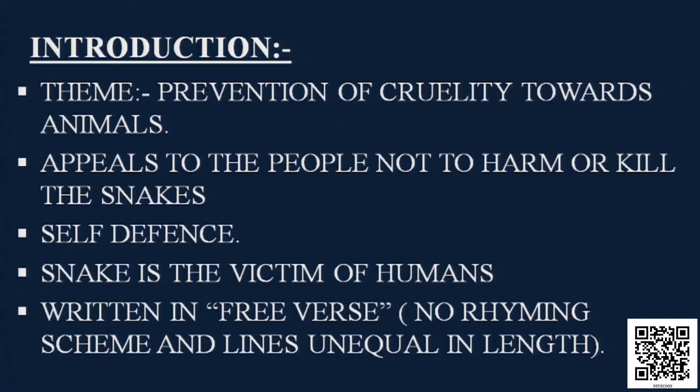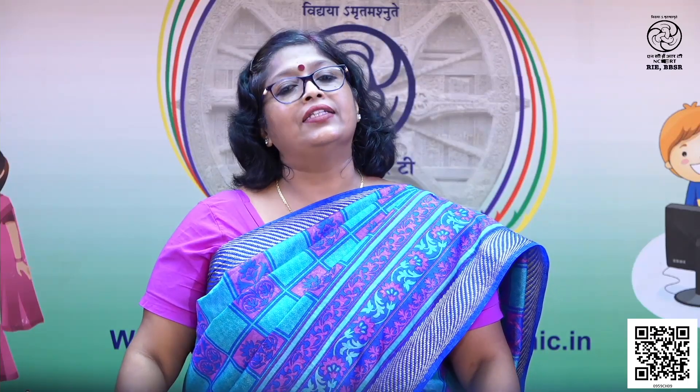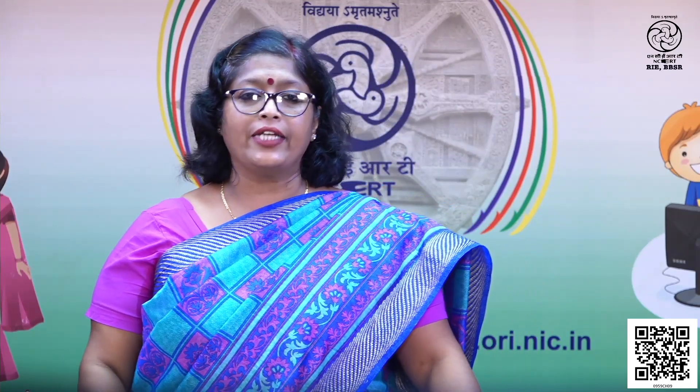In this poem, the snake is the victim of humans — one person has tried to harm the snake. The poem is written in free verse, meaning there is no rhyming scheme, no rhyming pairs, and the lines are unequal in length. Having these things in mind, let us have a quick look at the poem and read it. I hope all of you are ready with your textbook.